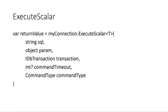ExecuteScalar is very similar but has a type parameter T. As you probably know from ADO.NET, ExecuteScalar returns the first cell of the first row of your SQL result set. This is good for things like COUNT or MAX, or just single pieces of data. You pass in a SQL string and it returns a variable of the type you specify — so if I SELECT COUNT, I specify int and get an int back.